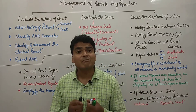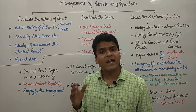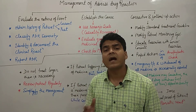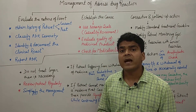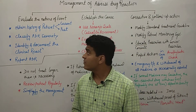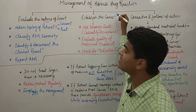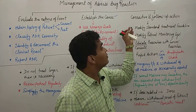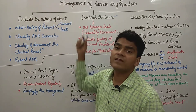Let's understand the various methods of management of adverse drug reactions. If any person is having an adverse drug reaction, what should doctors do — what strategy should they have? The first step is to evaluate the nature of the event, the second is to establish the cause, and the third is corrective and follow-up action.